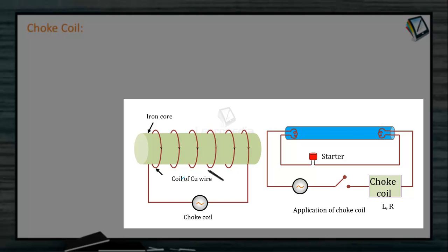We can calculate the current across this L-R circuit. The amplitude I₀ will be V₀/Z. Average power will be (V₀I₀/2)·cos φ. The power factor is cos φ = R / √(R² + ω²L²). Since inductance L of the choke coil is quite large — due to a large number of turns and high permeability of the iron core — while resistance R is small, cos φ tends to 0. Therefore, the power absorbed by the coil is extremely small.